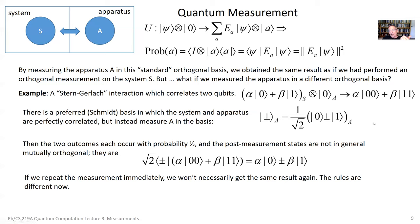This type of linear map of density operators to density operators of the form sum over A of M_A rho M_A adjoint is what we call a quantum channel, or sometimes a super operator — meaning it takes operators (density operators) to other operators (density operators). We also call it a trace-preserving completely positive map. The normalization condition on the M_A's ensures rho prime and rho both have the same trace. We say it's completely positive because it takes density operators to density operators, positive operators to positive operators. I'll explain what completely positive means in the next lecture.